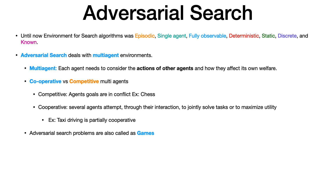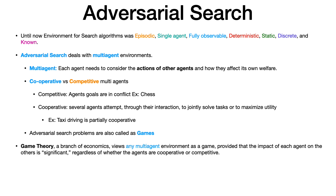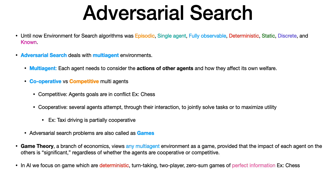Game theory, a branch of economics, handles any multi-agent environment as a game, provided the impact of one agent on another is significant. It can be cooperative or competitive. In AI, we confine ourselves to a simpler case: deterministic, two-player, zero-sum games of perfect information, whereas game theory is more generic and handles diverse multi-agent scenarios.